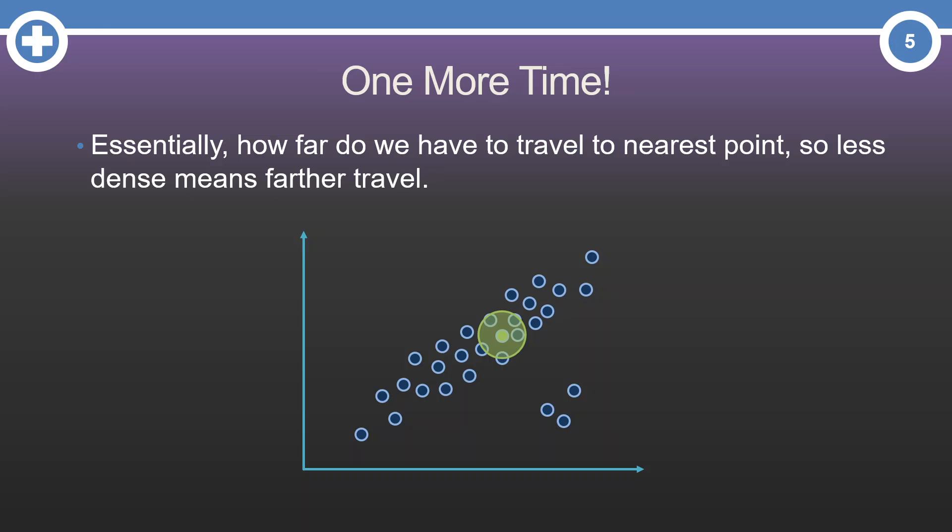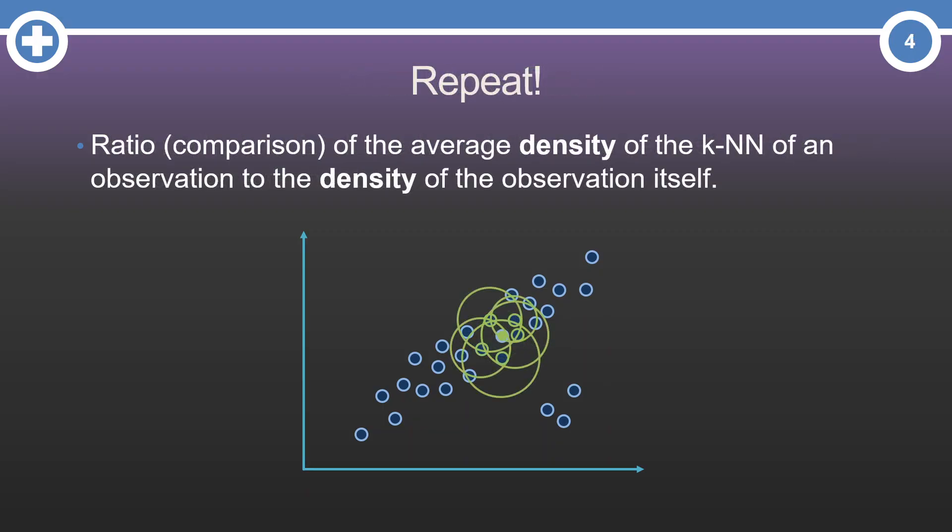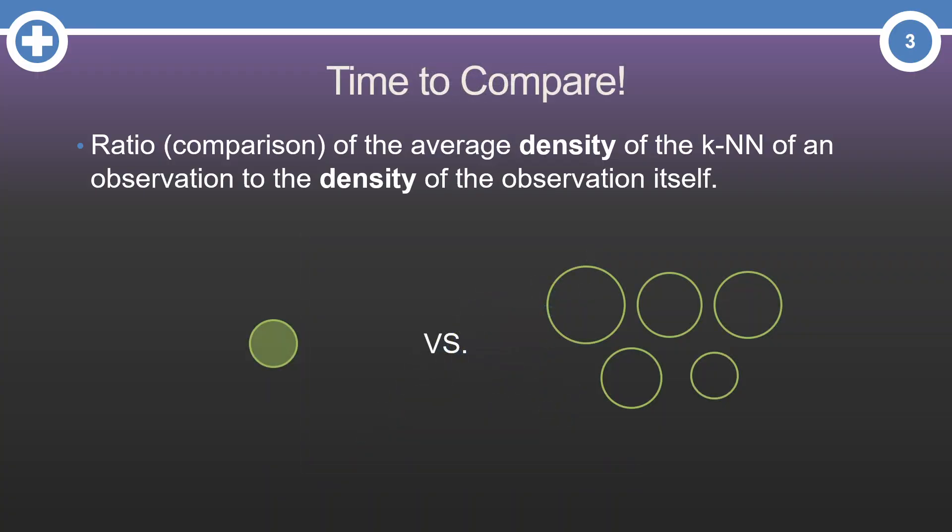Let's do this one last time for fun with a point in the middle of the data cloud. Take the highlighted point, find its density. Look at this highlighted point's neighbor's densities. Compare.